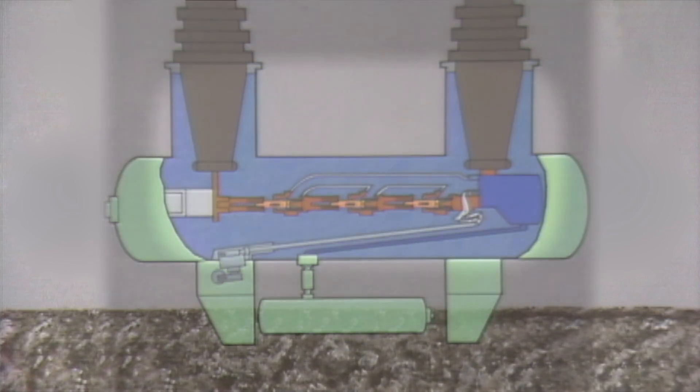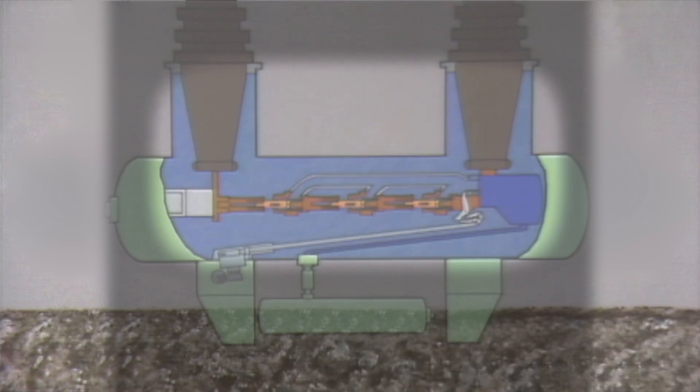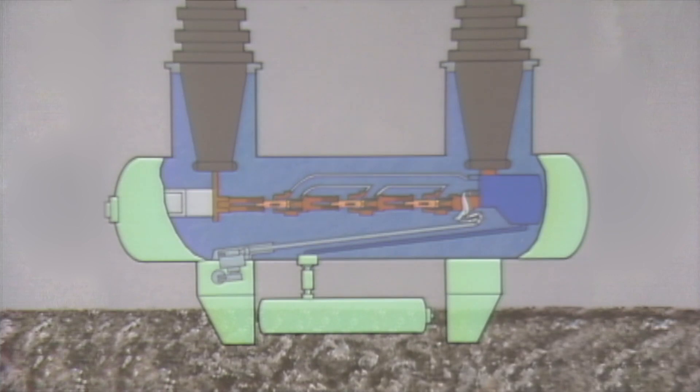The interrupting mechanisms are enclosed in a tank that is filled with SF6 gas at a low pressure. The main arc extinguishing features include several sets of contacts, a reservoir of high pressure SF6 gas, a blast valve, and blast tubes.